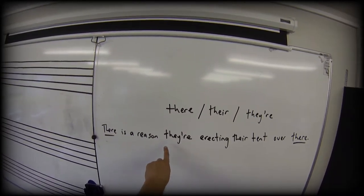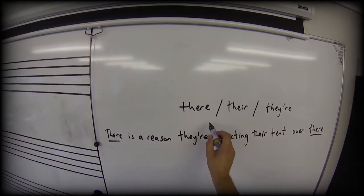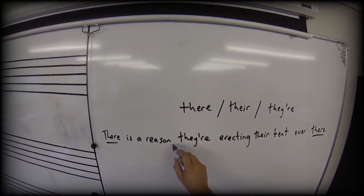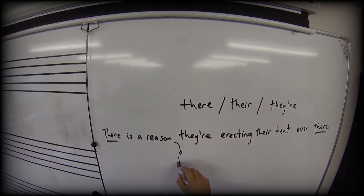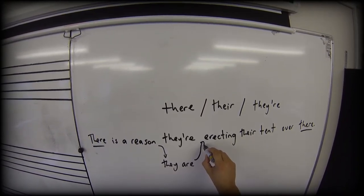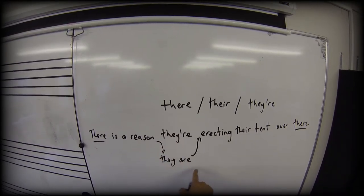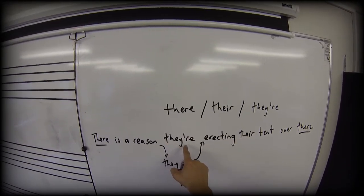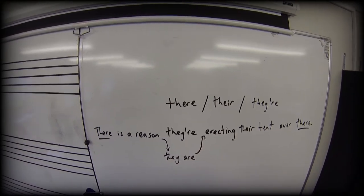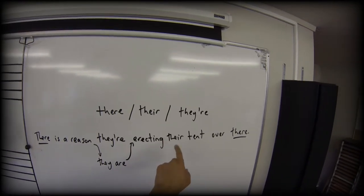Right. Let's look at they are. Now in formal writing we don't tend to contract. So we could avoid this hurdle by just writing they are. Because that's why the apostrophe is there. It's because two words have been joined, contracted together, and the A has been removed and replaced by an apostrophe. So we could say there is a reason they are erecting their tent over there.